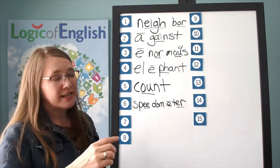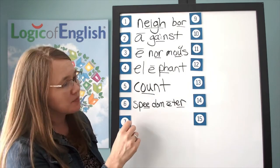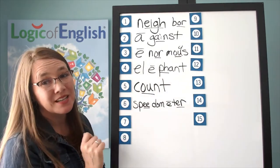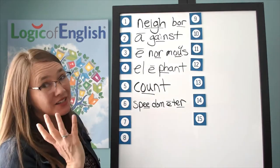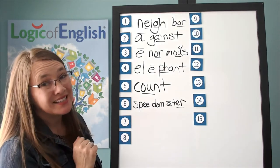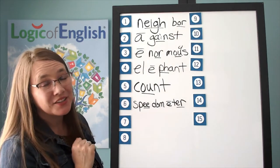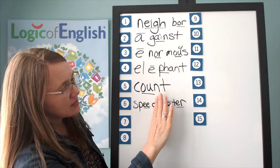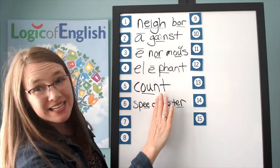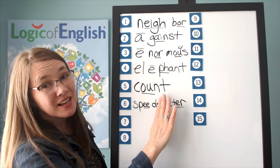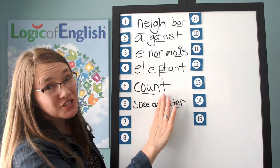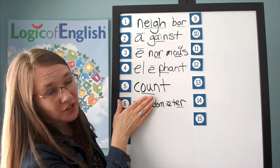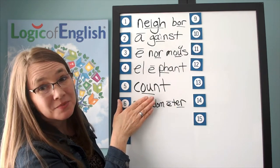Notice this syllable is saying its schwa sound. Any vowel may say its lazy sound in an unstressed syllable. Do you see that this has the word speed? A speedometer measures your speed, and a meter means measure.